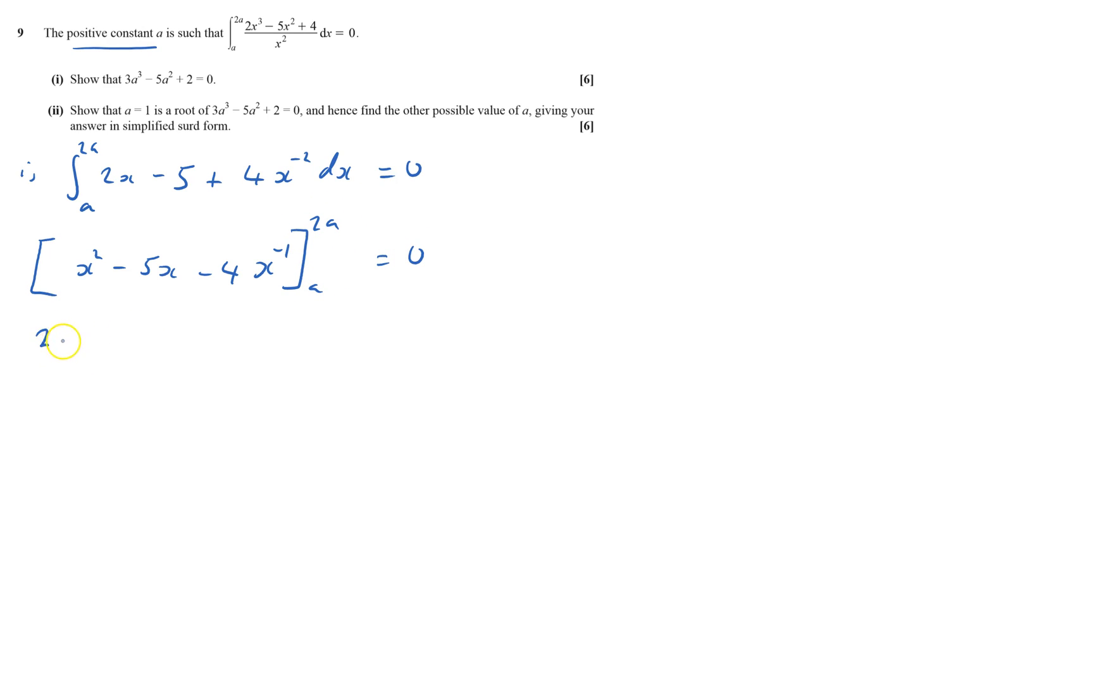Chuck in 2a, which gives me 2a squared minus 5 times 2a minus, that means 4 over x. So when x is 2a, that'll be 4 over 2a. And I'll take away, and I'll put in a, and I'll take away all of this and put brackets, so I'll be a squared minus 5a minus 4 over a, and that equals zero.